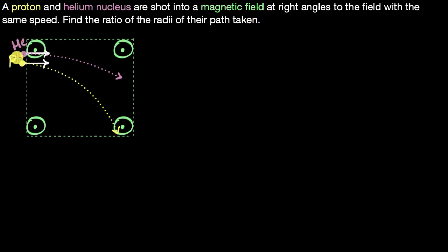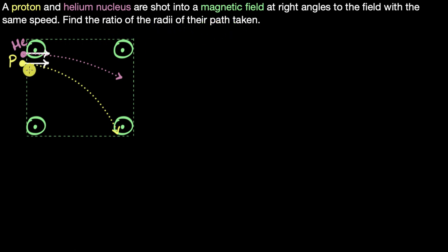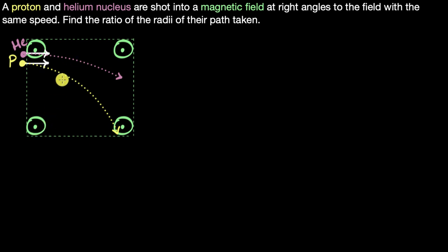We have a proton and helium which are thrown into a magnetic field perpendicularly — the magnetic field is coming out of the screen — and they're thrown with the same speed. We have to find the ratio of the radii of their paths. So apparently they go in circles, taking circular paths, and we need to find out what the ratio of those radii are.